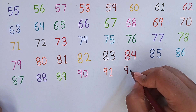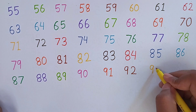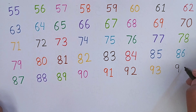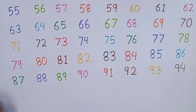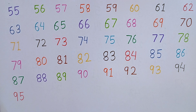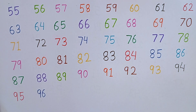After 91, I will write 92. 9, 2 — 92. After 92, I am writing 93. 9, 3 — 93. This is 93. After 93, the next number will be 94. 9, 4 — 94. This is 94. After 94, the next number will be 95. 9, 5 — 95. This is 95. After 95, the next number will be 96. 9, 6 — 96.